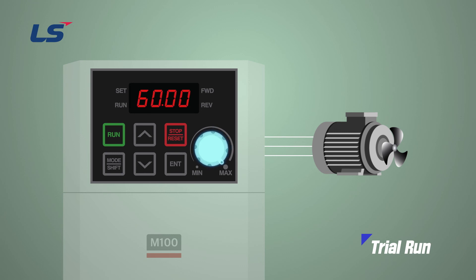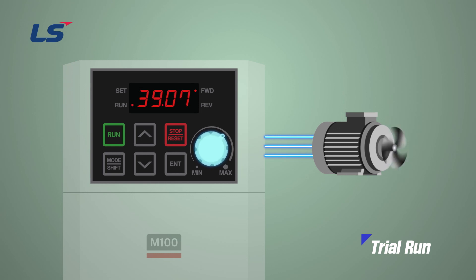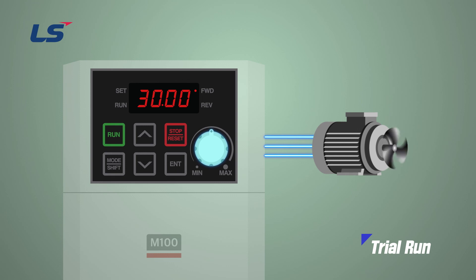After setting the frequency, try to operate it by pressing the Run key as well. You can continuously change the target frequency by volume while driving. Above, we learned about the basic operation of the M100 and how to run a simple test run. Thank you.